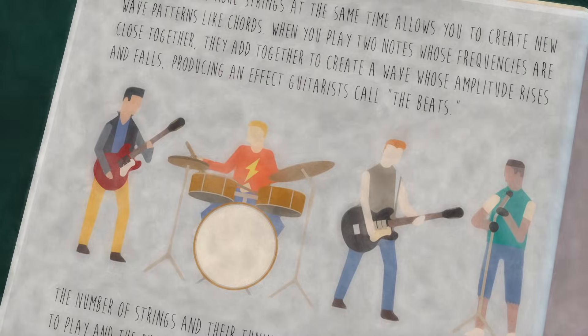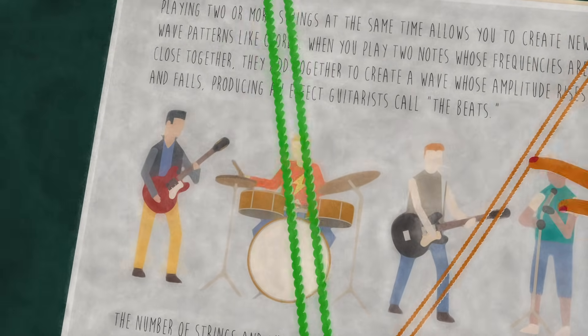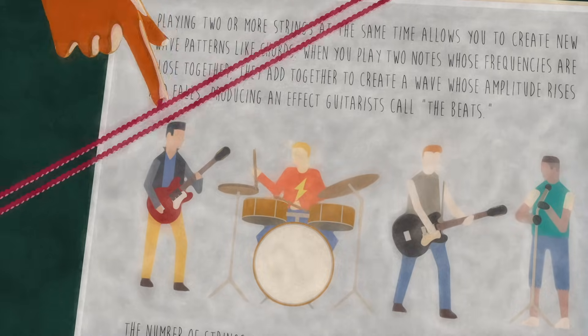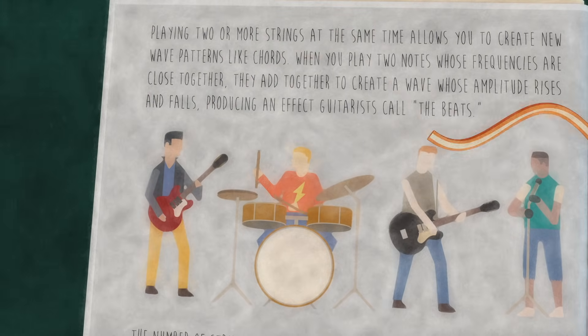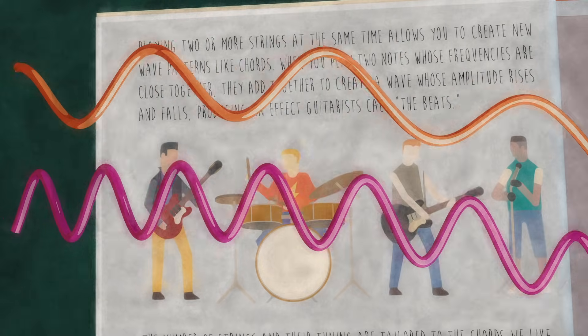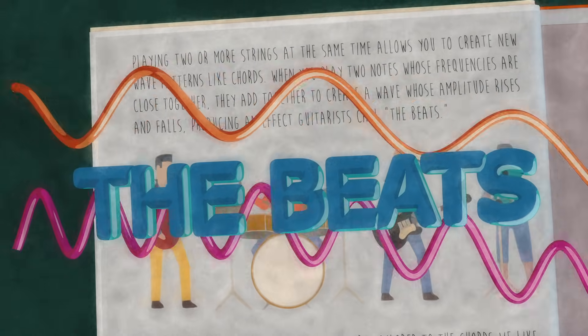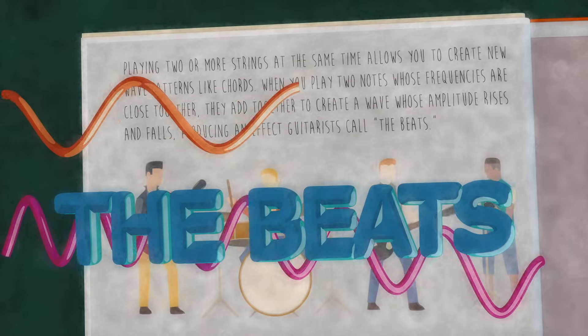Playing two or more strings at the same time allows you to create new wave patterns like chords and other sound effects. For example, when you play two notes whose frequencies are close together, they add together to create a sound wave whose amplitude rises and falls, producing a throbbing effect, which guitarists call the beats.